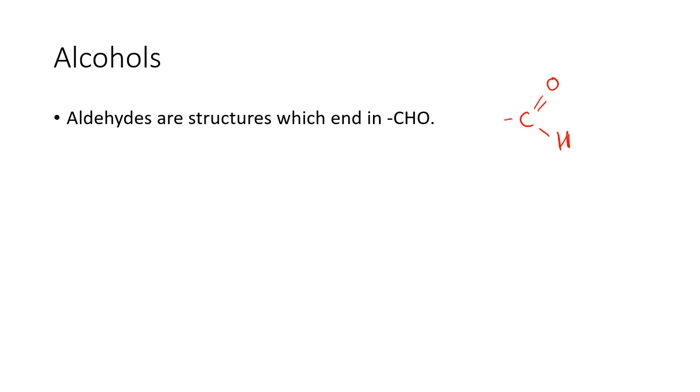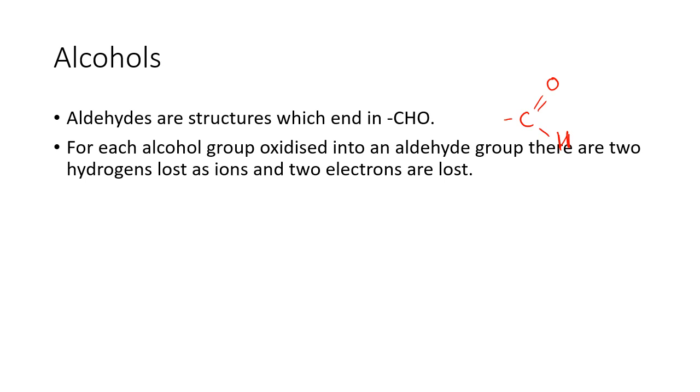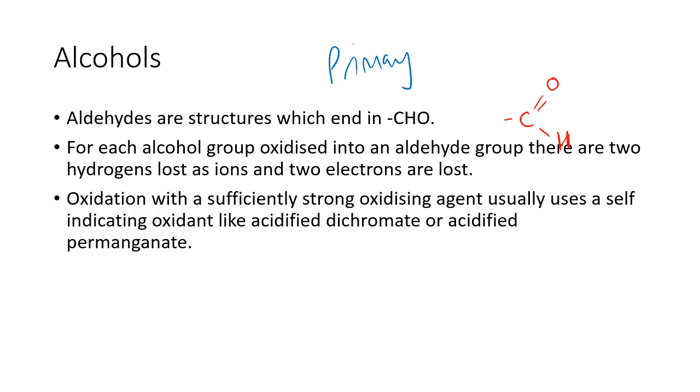For every alcohol group oxidized into an aldehyde group, there are two hydrogens lost as ions and two electrons are lost. I haven't mentioned this probably in the start part, but this is of primary alcohols. Primary alcohols only will form aldehydes. Let's have a look.